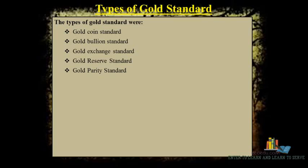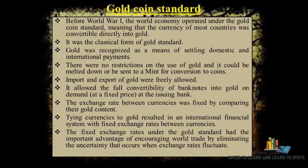Coming to the types of gold standard: gold coin standard, gold bullion standard, gold exchange standard, gold reserve standard, and gold parity standard. The gold coin standard is also called the gold currency standard. It is the oldest form of gold standard, also called the traditional gold standard, and was the predominant monetary standard in many developed countries before World War I.